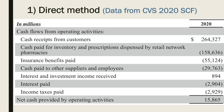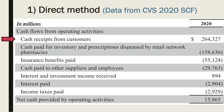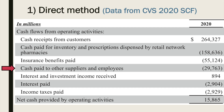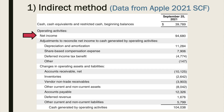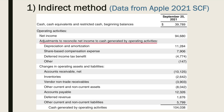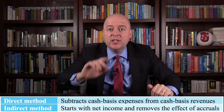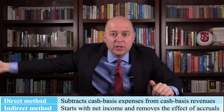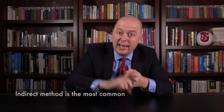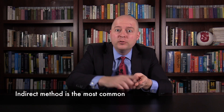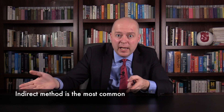The operating section will be presented in one of two ways. If the company uses the direct method, it will show cash collected from customers, and then subtract cash payments to suppliers, to employees, and for interest and taxes. If the company uses the indirect method, the operating section will instead start with net income and then show various adjustments to undo the effects of accrual accounting.